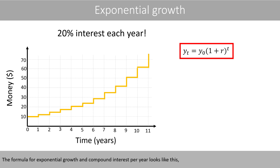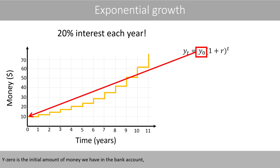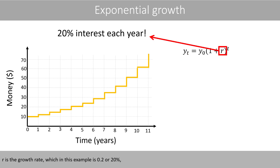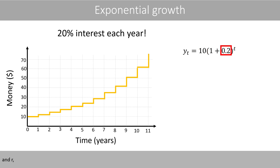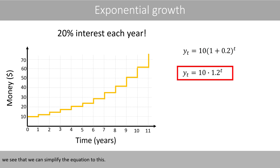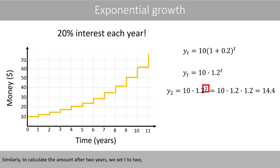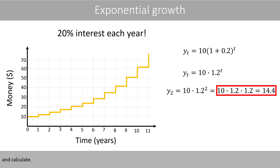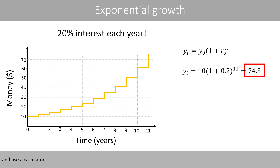The formula for exponential growth and compound interest per year looks like this, where Y sub t represents how much money we have in the bank account after a certain number of years. Y₀ is the initial amount of money, R is the growth rate — which in this example is 0.2 or 20% — and t is, in this example, the time in years. If we plug in our numbers for Y₀ and R, we can simplify the equation. To calculate the amount of money after 1 year, we set t to 1; after 2 years, we set t to 2. To find how much money we have after 11 years, we set t to 11, and we see that we will have about $74.